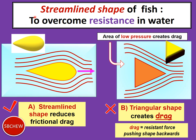Let's explain the streamlined shape more clearly. Imagine two shapes being moved by hand through water: one is a streamlined shape like a fish, and the other is a triangular block of wood. You have your hand on the triangular object moving it along in a tank of water, and you'll find there is a lot of resistance.